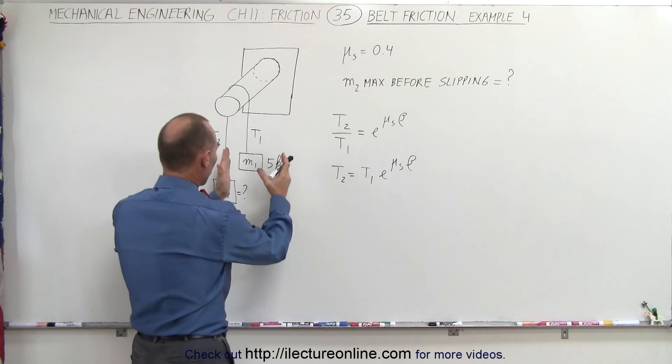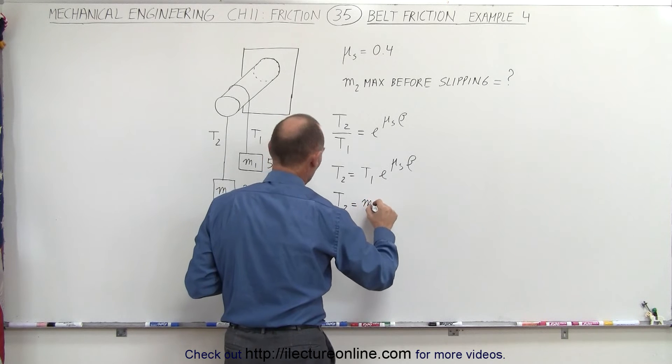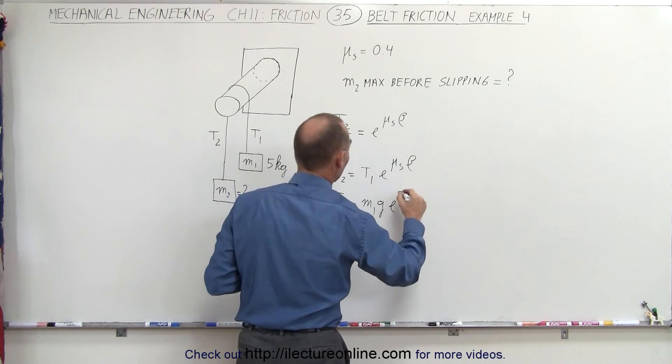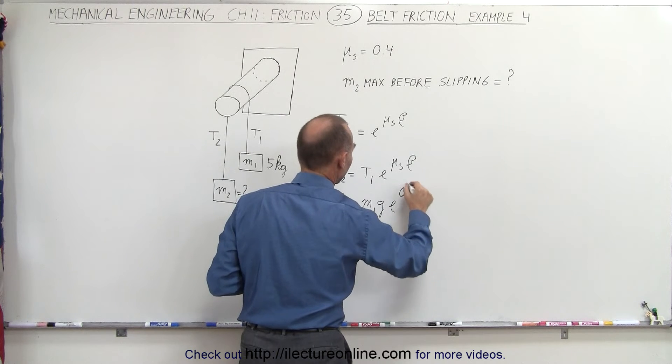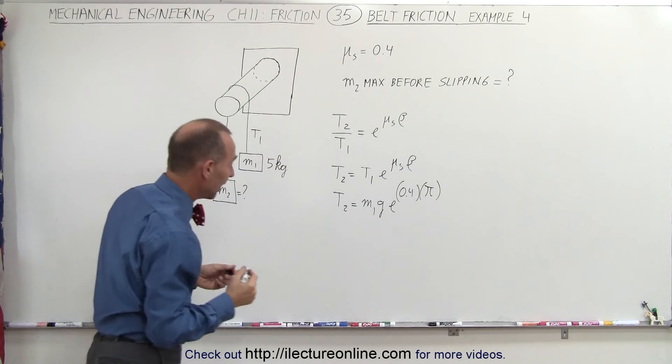T1 is going to be equal to the weight of this object, so we can then write that T2 is equal to M1G times E to the coefficient of static friction, 0.4, and the angle would be a half of 2 pi, half a complete circle, which would be pi.